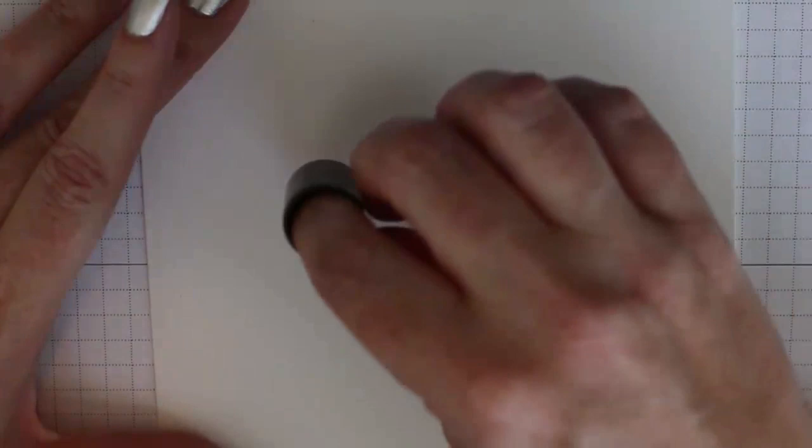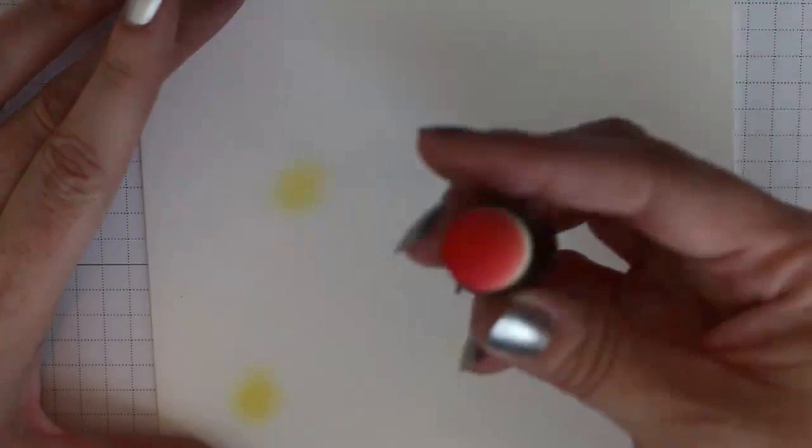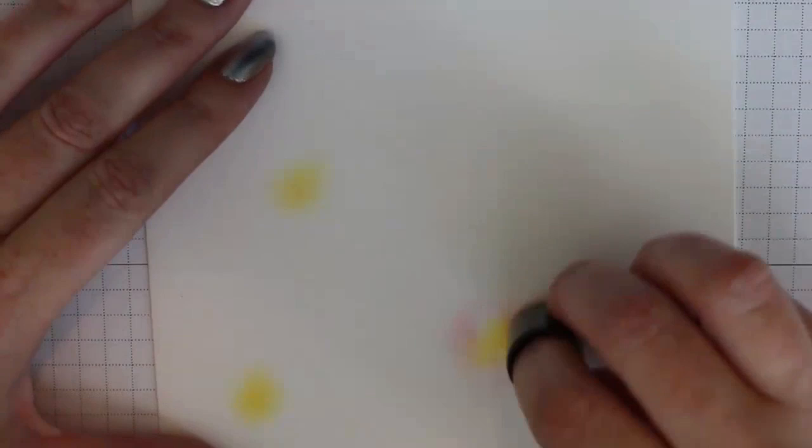To begin with, I just ink up a sponge dauber with Daffodil Delight, tap it off once on my mat. That kind of helps you eliminate that sponge texture when you're using these little daubers, so make that a habit, and I'm going to use very light pressure throughout this technique.